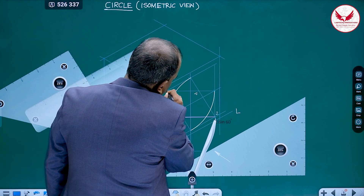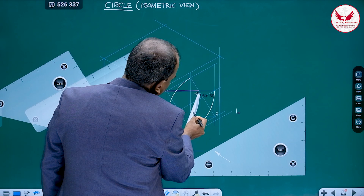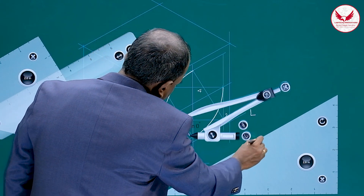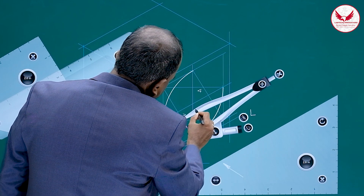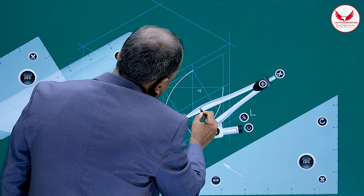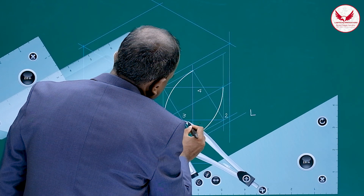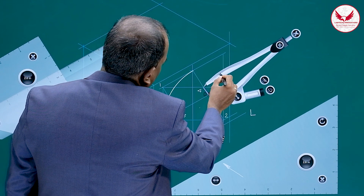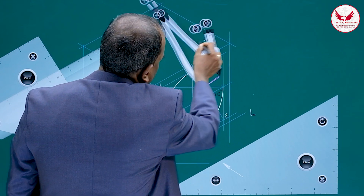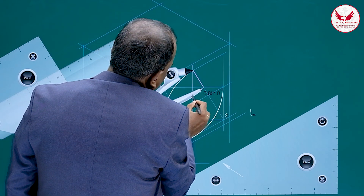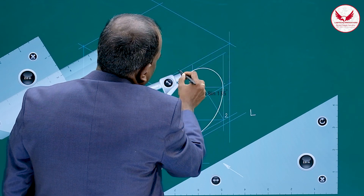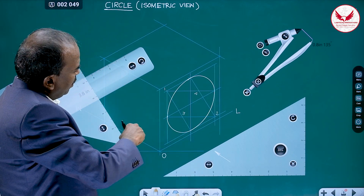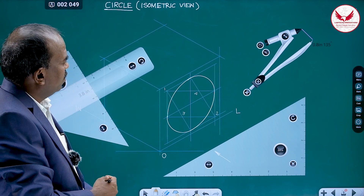Now use center 3 with the appropriate radius for the next quarter circular portion. There may be a slight shifting in the center, so make small adjustments as needed. Then use center 4 for the final quarter arc. With slight adjustments, complete the ellipse. We have drawn the entire ellipse using only the compass — this is why it is called the four-center method.